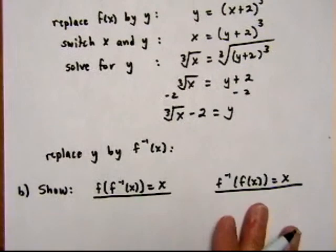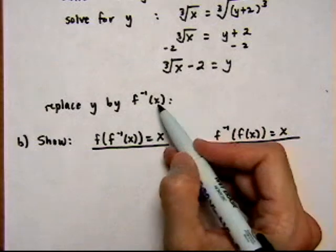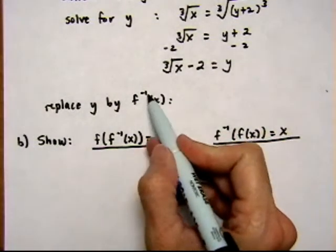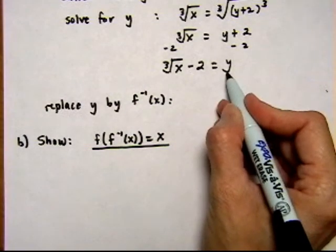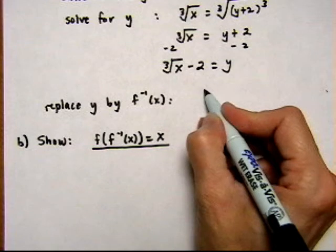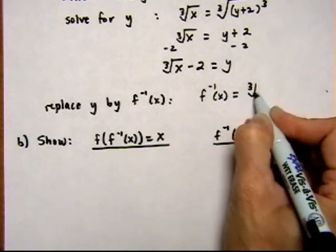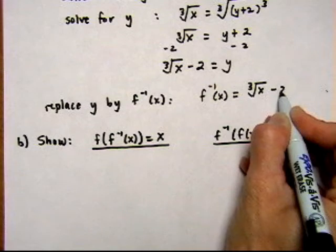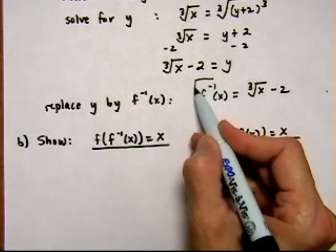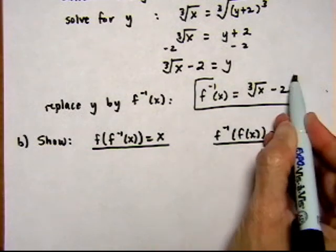And that right there is our inverse function, but let's do a notation change. We will write it as f inverse. And we'll put the f inverse on the left side instead of the right. So f inverse is now cube root of x minus 2. And that is the inverse of f(x).